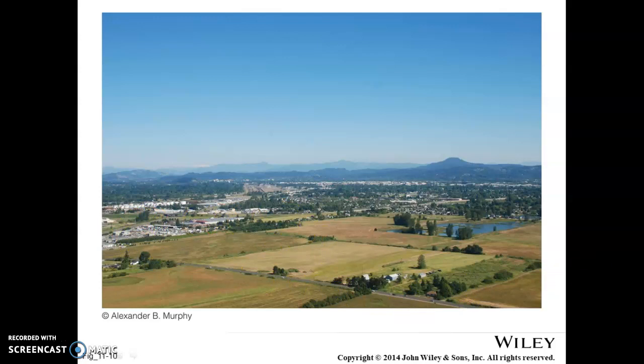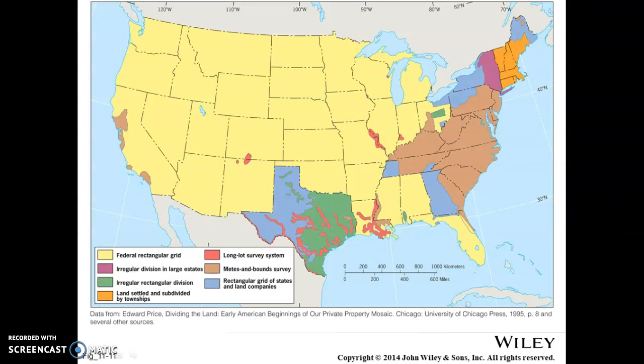It's very much about uniformity — it makes everything look somewhat the same. You can see on the next map the areas where we use that rectangular system, mostly the yellow areas, which are lands obtained after the end of the American Revolution. The rest of the areas, shown in different colors, reflect different types of survey systems brought over by the different European countries that came in and settled in North America.